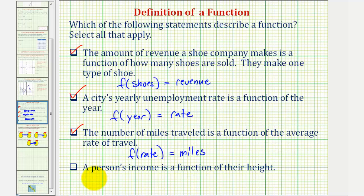The last statement: a person's income is a function of their height. Here the input would be the height and the output would be the income. If this is a function, we would have f of height equals income.